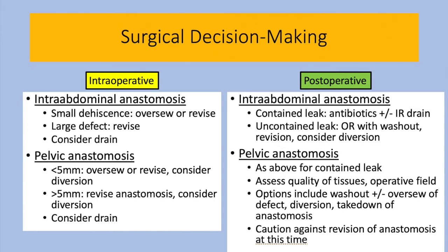A summary slide regarding surgical decision-making: the surgeon must take into consideration the status of the patient while considering the options. For intraoperative intra-abdominal leaks, a leak may not be noted unless mucosa or succus is grossly visualized. If colonoscopic evaluation reveals a small dehiscence, we can consider over-sewing or revision. If the defect is large, revision is warranted. A drain can be considered, not to prevent leak, but to alert postoperatively that there may be a problem. The pelvic leak is more likely to be discovered intraoperatively due to the ubiquitous leak test. If a small leak is noted — less than 5 millimeters — over-sewing or revision should be done, and diversion may also be needed. If the leak is larger, revise the anastomosis with consideration for diversion.